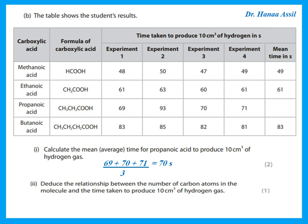To deduce the relationship between number of carbon atoms and time taken: methanoic acid (one carbon) needed 49 seconds, ethanoic needed 61 seconds, propanoic needed 70 seconds, and butanoic needed 83 seconds. So the more carbon atoms in the molecule, the longer the time taken to collect 10 cm³ of gas.